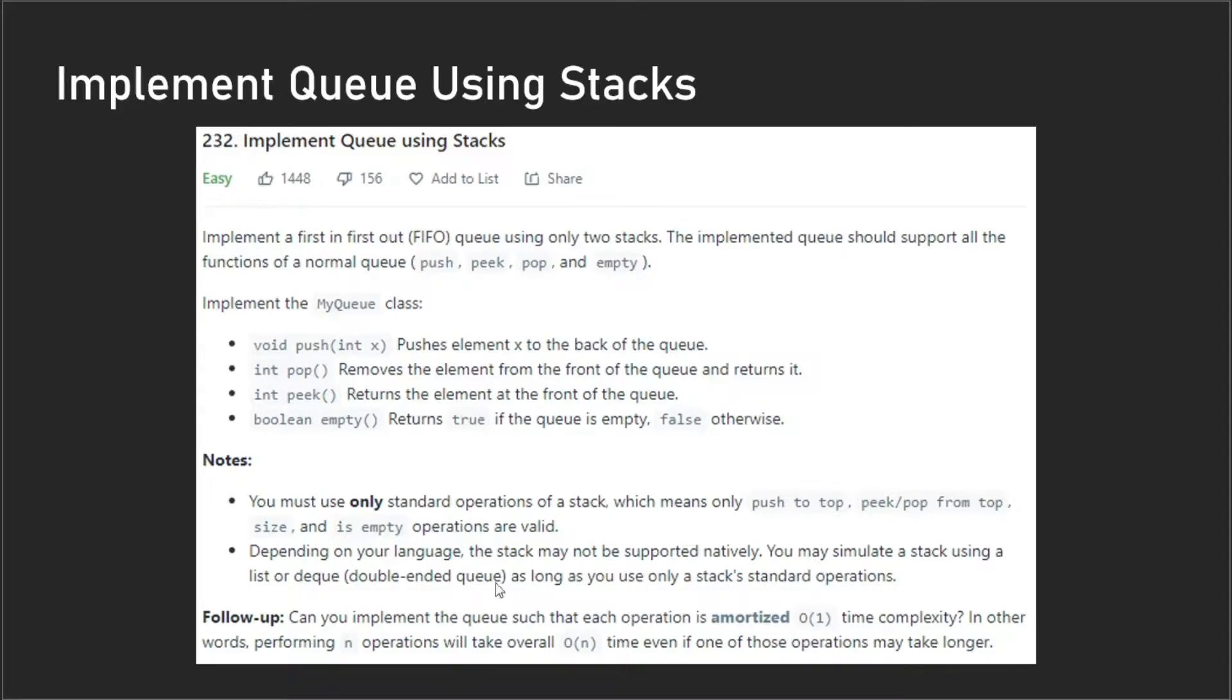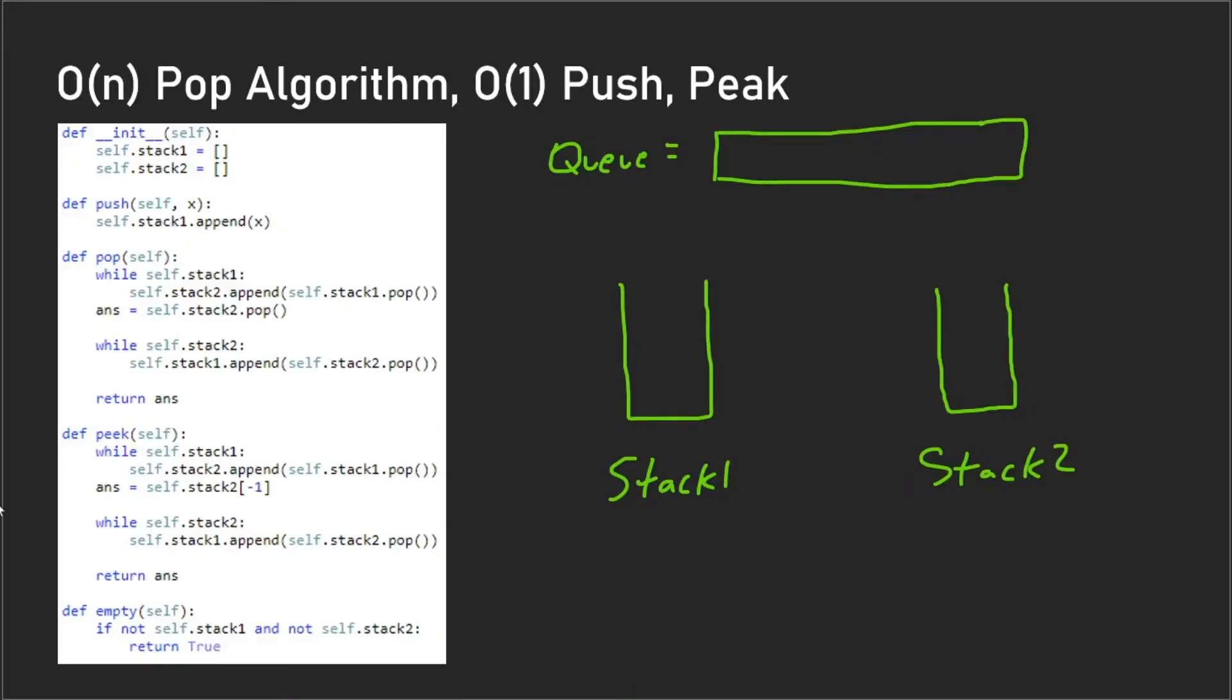Say we have three elements we want to push onto our queue, and let's say those three elements are one, two, and three in that order. So we have one, two, and three, and when we go to pop elements out of the queue, the one would go first, then the two, then three.